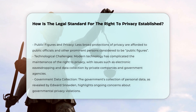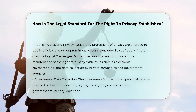The concept of the right to privacy has evolved over time. As early as 1890, Warren and Brandeis published an article titled 'The Right to Privacy,' which is often cited as the first implicit finding of a U.S. stance on the right to privacy.